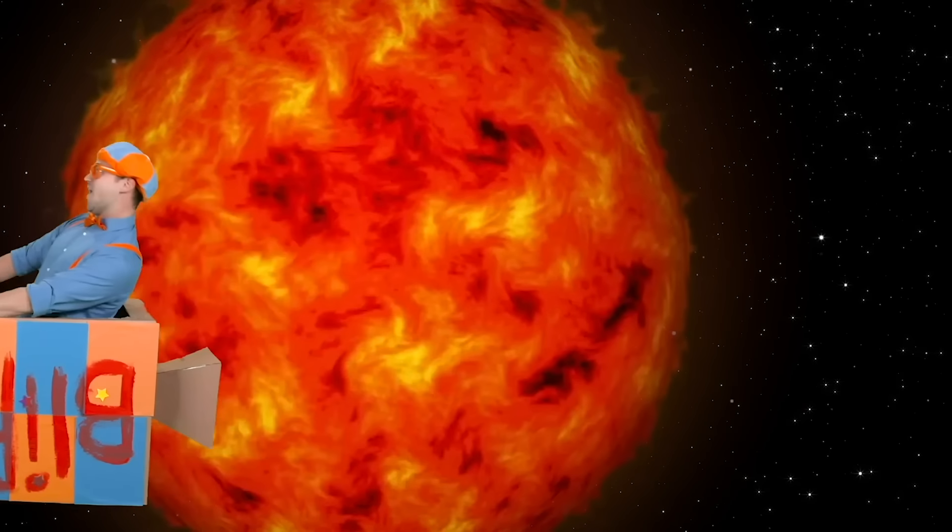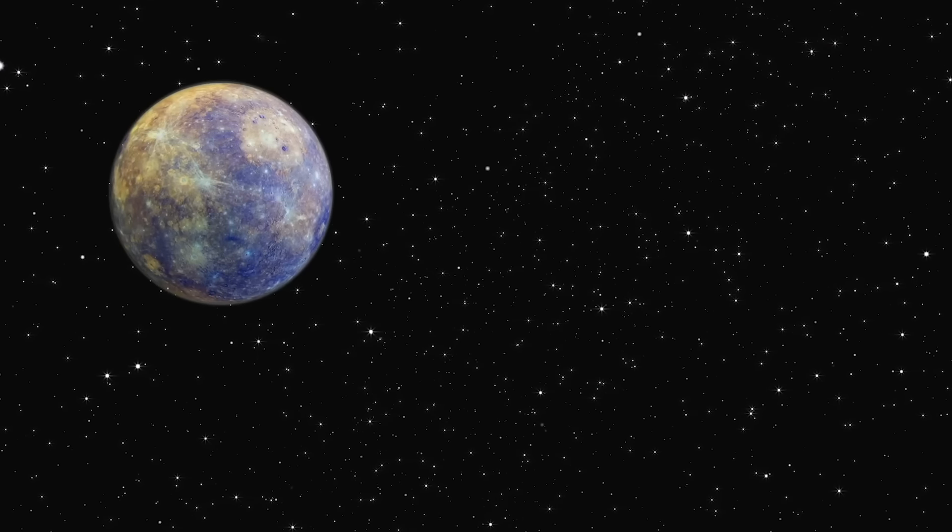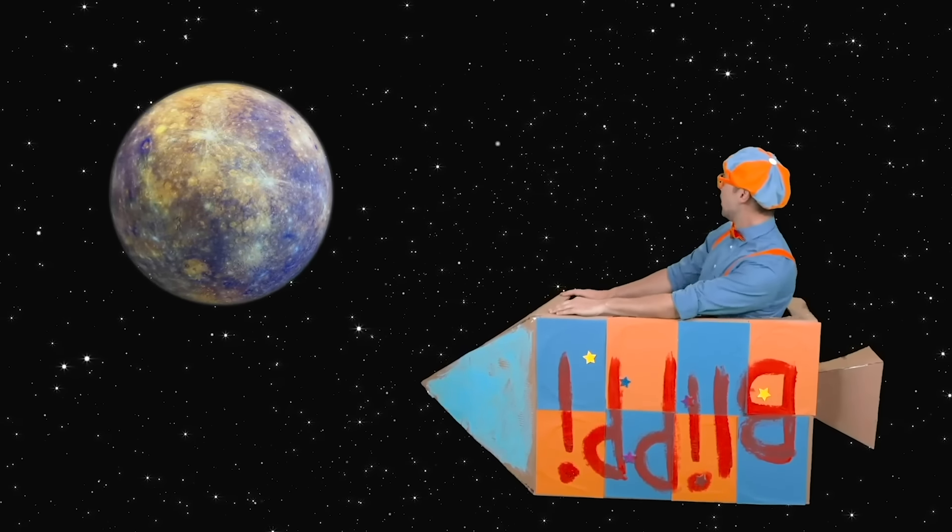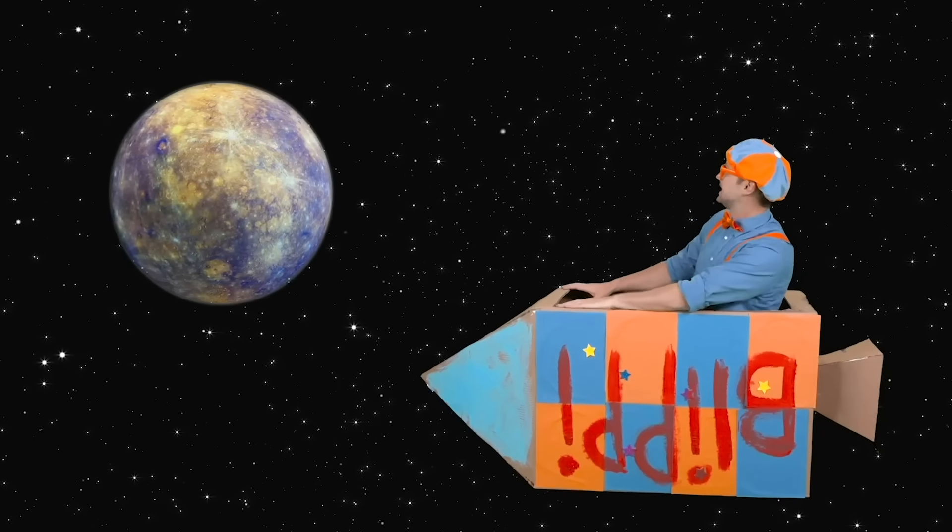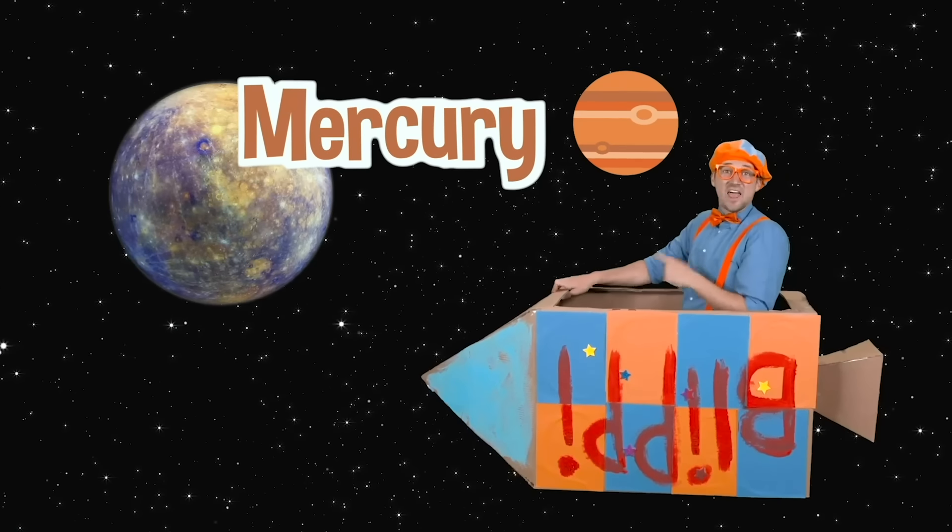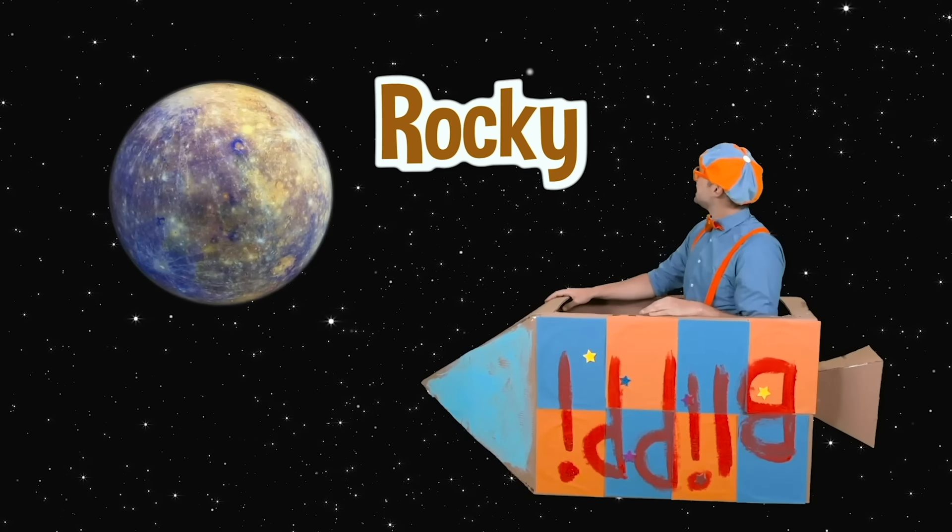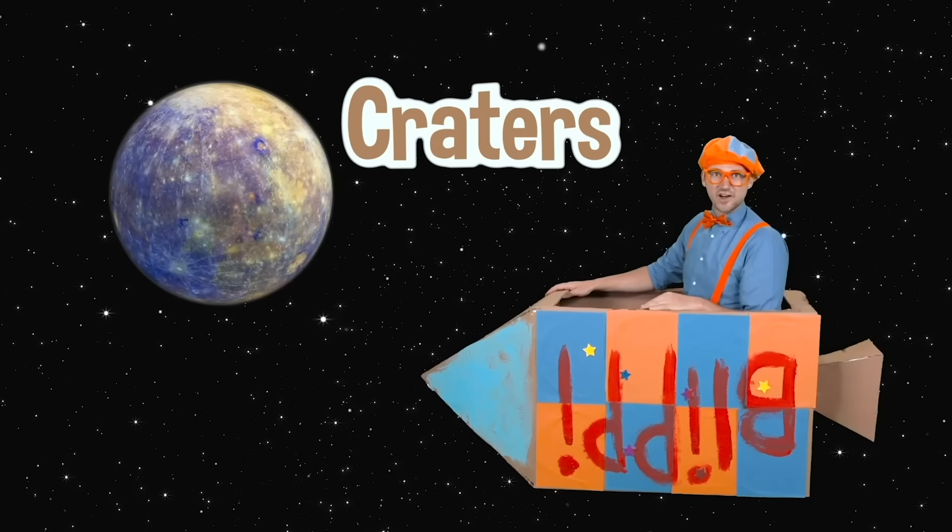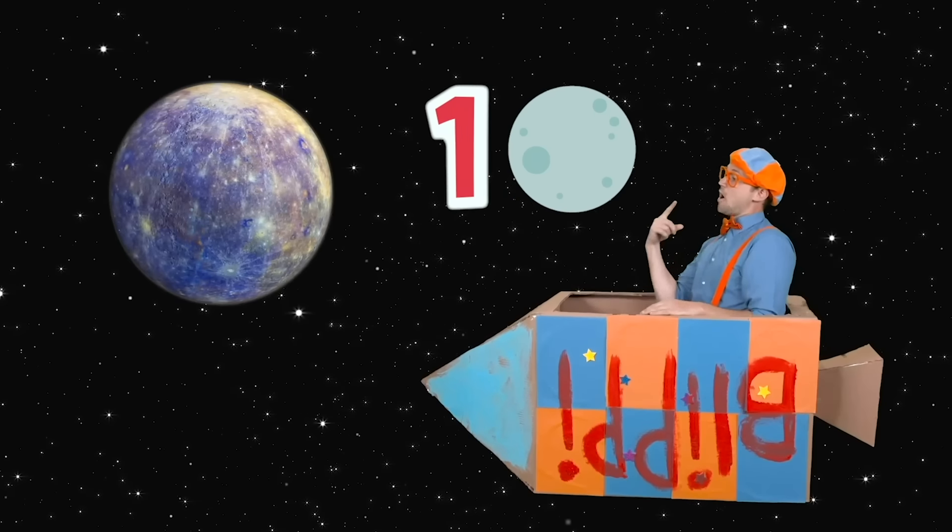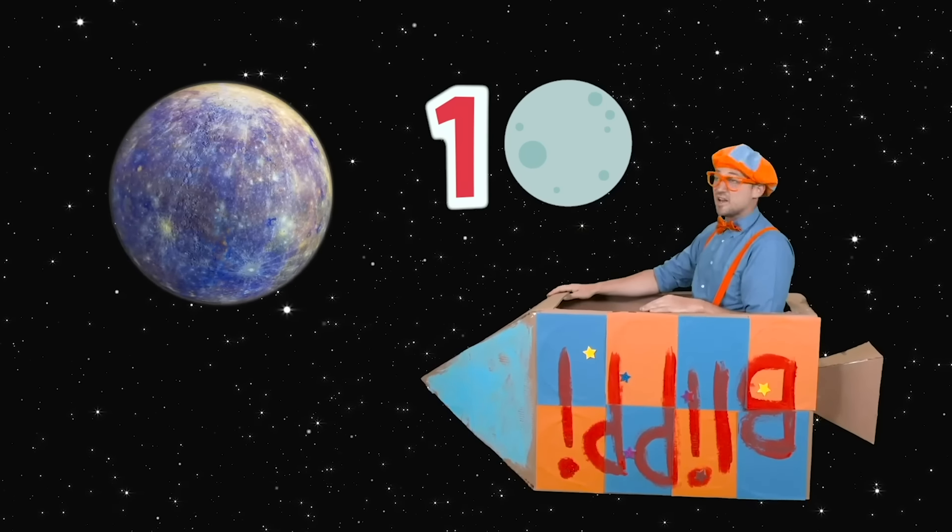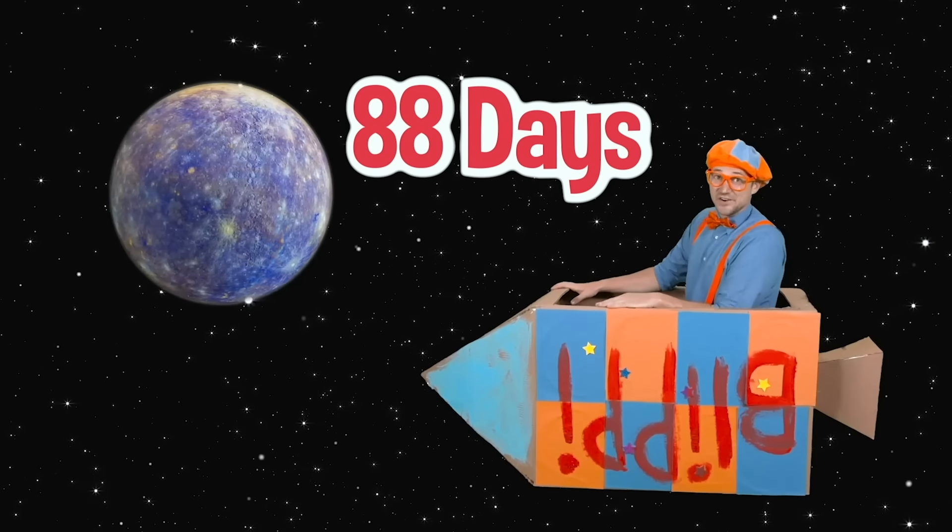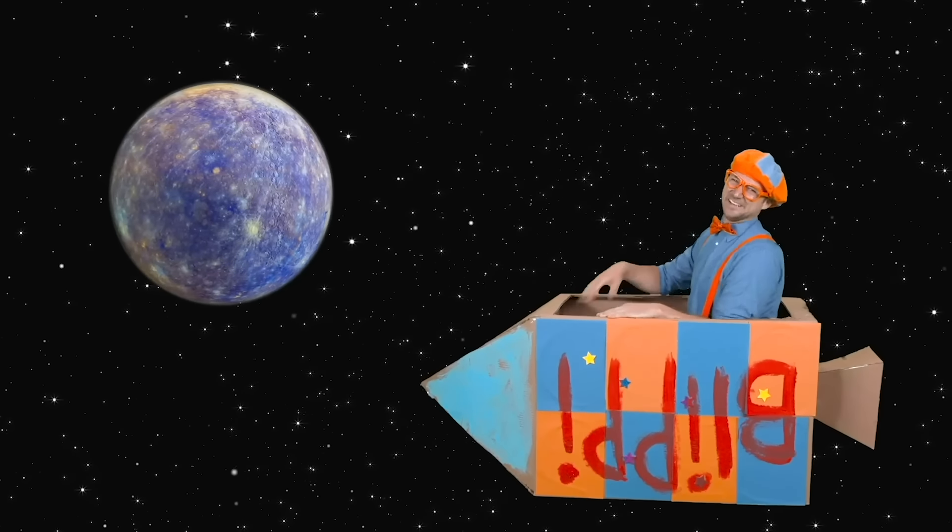Here we go! Outer space is so much fun! Oh! Look at that planet. That planet is Mercury. Wow! That planet is really rocky. And there's so many craters on it. And actually, since it's the closest planet to the sun, one rotation around the sun is super fast. It's only about 88 days on Earth. Mercury is awesome!